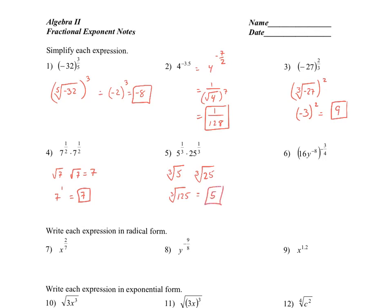Number six, the exponent of negative 3/4 applies to both values inside the parentheses. So I'll end up with 16 to the negative 3/4 power and y — when I multiply a negative times a negative, I get a positive, so that becomes y to the positive 6. This will become y to the sixth over the fourth root of 16, that quantity to the third power, which gives us y to the sixth over — the fourth root of 16 is 2 — so that's 2 to the third, or y to the sixth over 8.